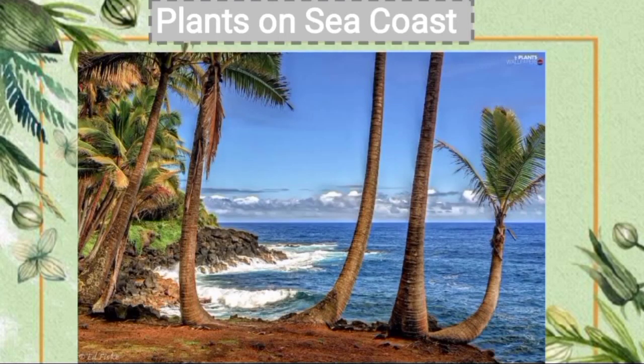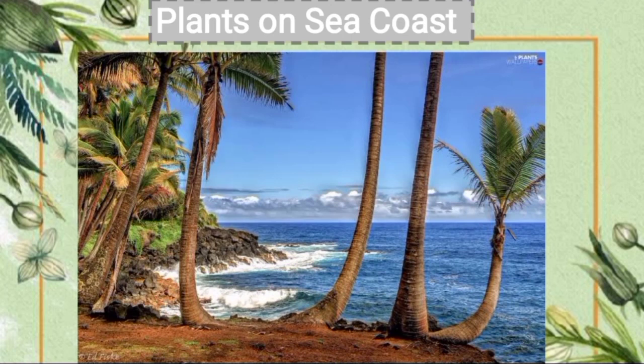Next is plants on the seacoast. Coconut trees grow in coastal areas because they can survive in salty water and prefer areas of high rainfall. The seeds of such plants are carried off to faraway places by water.